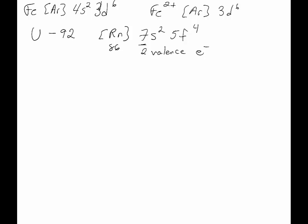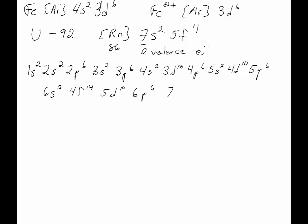If that's the noble gas configuration for uranium, what's the full electron configuration for uranium? To get 92 electrons, you would start with 1s2, 2s2, 2p6, 3s2, 3p6, 4s2, 3d10, 4p6, 6s2, 4f14, 5d10, 6p6, 7s2, 5f4.